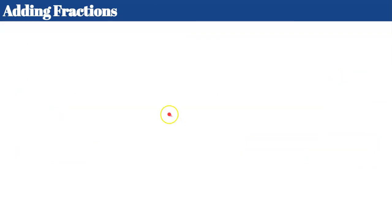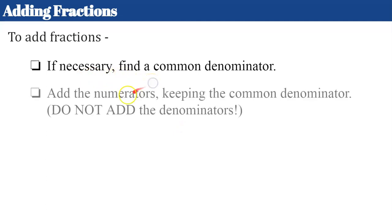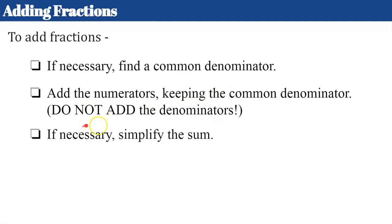Let's now review adding fractions. Our steps to add fractions are: first, if necessary, find a common denominator. Then we're going to add our numerators, keeping the common denominator — we do not add the denominators. If necessary, we're going to simplify our sum. Sum is the answer to an addition problem, and our final answer we want to make sure is in simplest form.